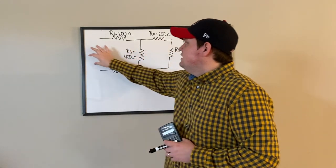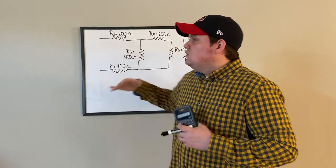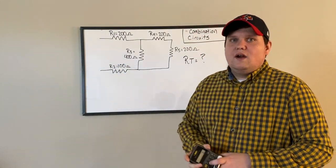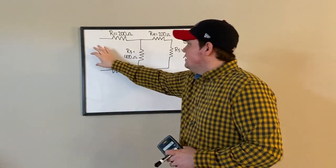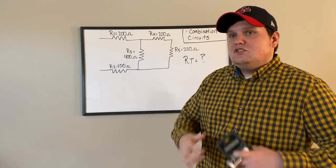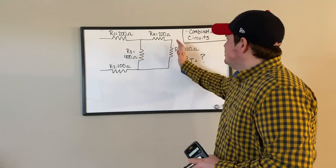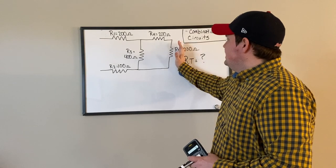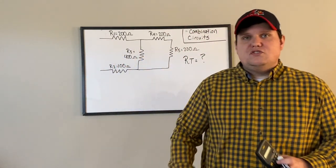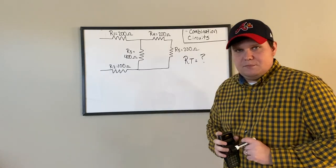So if we had a voltage source in this circuit, we would place it right here. To start simplifying, we're going to start at this end and work our way towards the source, working it one branch at a time.